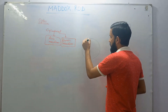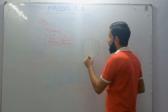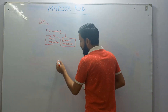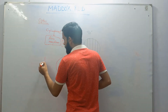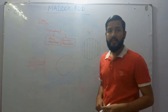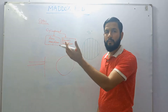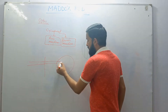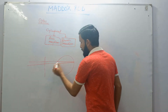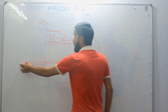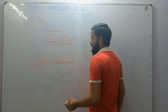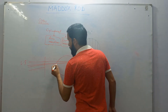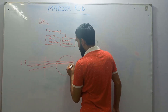Let's suppose the Maddox rod is placed such that the axis of individual cylinders is at 90 degrees. When light rays pass through the Maddox rod, the axis meridian has no power, so they pass through the Maddox rod undeviated and come towards the eye. The eye, using its refractive power, makes a point image of the light source.